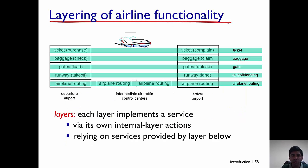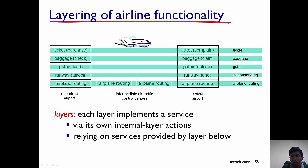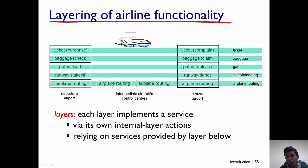Only the end hosts in the airline analogy have all five layers implemented. For example, you have ticket purchase, baggage check, and gates — all five layers running from the application all the way down. Airplane routing takes place at routers while you are flying, and once you arrive at the airport, only some of the steps apply there.